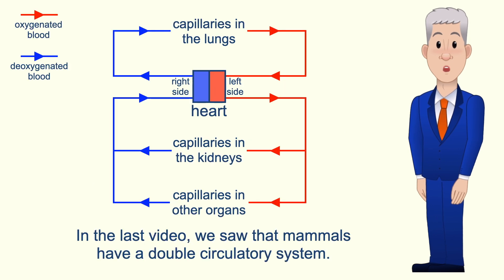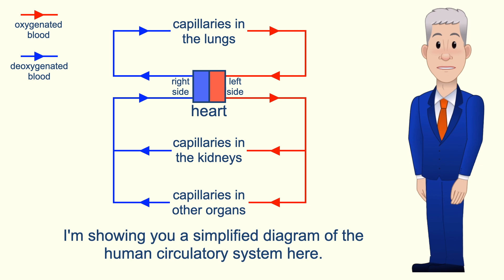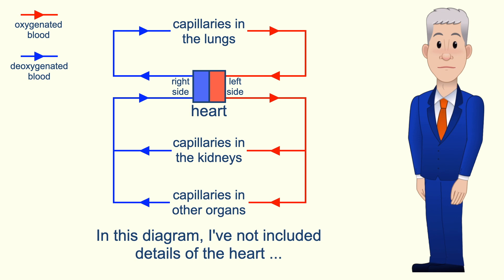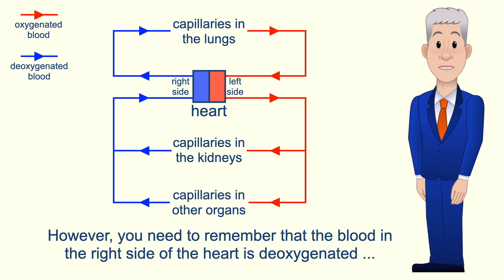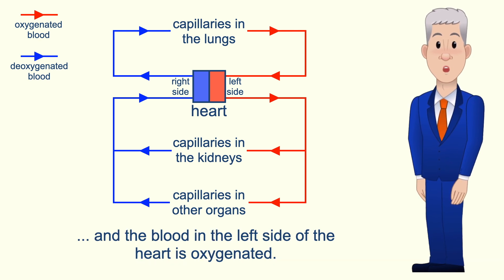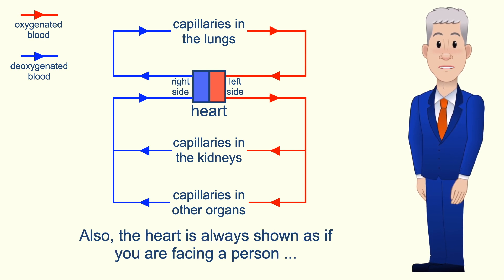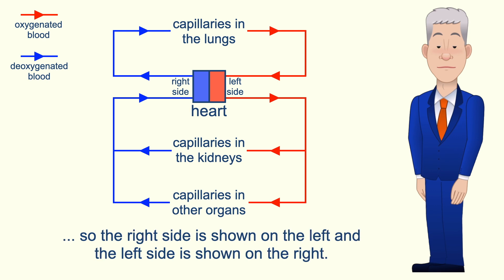In the last video we saw that mammals have a double circulatory system. I'm showing you a simplified diagram of the human circulatory system here. In this diagram I've not included details of the heart as we're looking at that in a later video. However you need to remember that the blood in the right side of the heart is deoxygenated and the blood in the left side of the heart is oxygenated. Also the heart is always shown as if you're facing a person, so the right side is shown on the left and the left side is shown on the right.